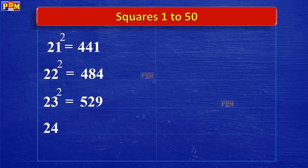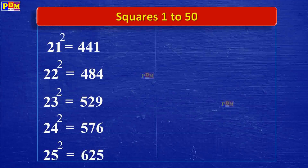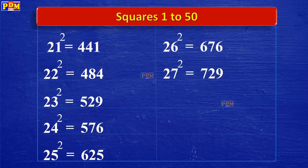24 squared is 576. 25 squared is 625. 26 squared is 676. 27 squared is 729.